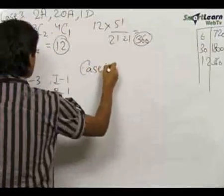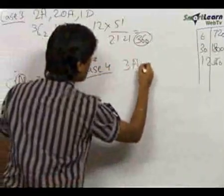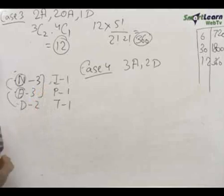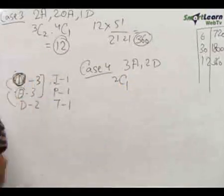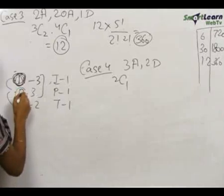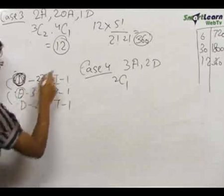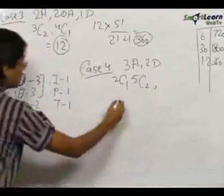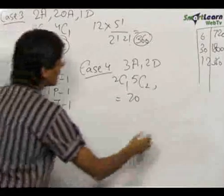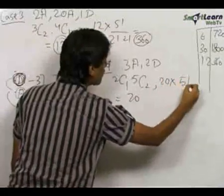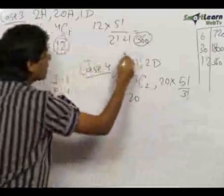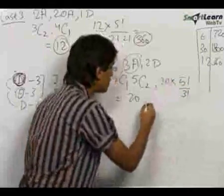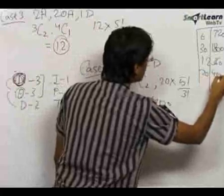Case 4: Three alike and two different. Three alike alphabets can be selected from N or E, so this is 2C1. Let's say we selected N — the remaining alphabets are E, D, I, P, T (five), and we select two: 5C2 = 10. So selections = 2 × 10 = 20. Words formed = 20 × 5!/3! = 20 × 20 = 400.